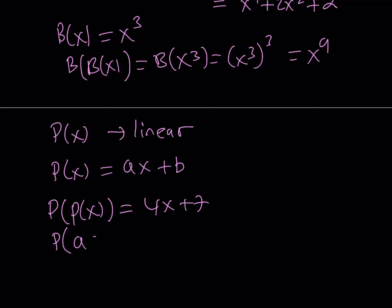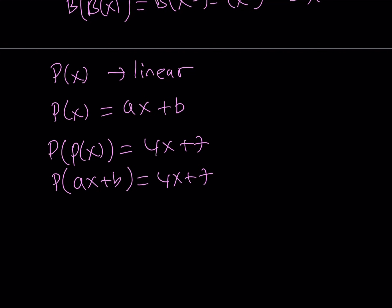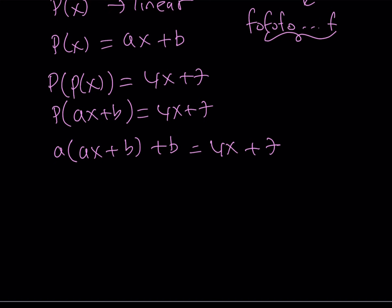Now if you compose P with itself, which is P of P of X, we're supposed to get 4X plus 7. Now replace P with AX plus B and you're supposed to get 4X plus 7. Now apply the definition of P to AX plus B, so that's going to be A times the quantity AX plus B plus B. Sometimes you're going to have a problem like F of F of F of dot dot dot N times. That's basically what it means. And of course in these cases hopefully there's some type of pattern.